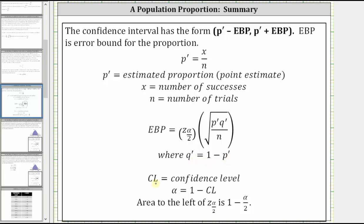For review: the confidence level is equal to CL, alpha is equal to one minus the confidence level, and alpha divided by two is often used for the subscript on the z-score, which indicates the area to the right of the z-score. This means the area to the left, which we need to find the z-score using technology, is equal to one minus alpha divided by two.